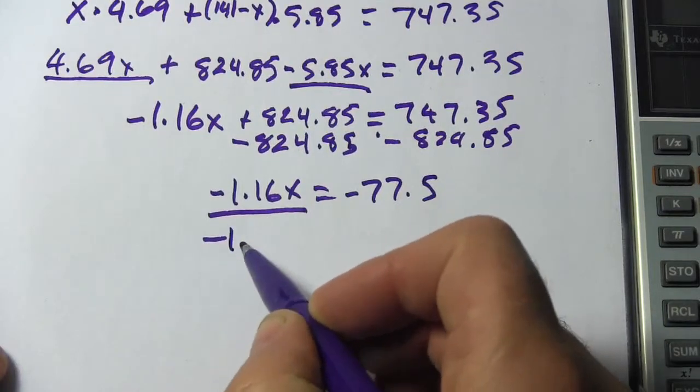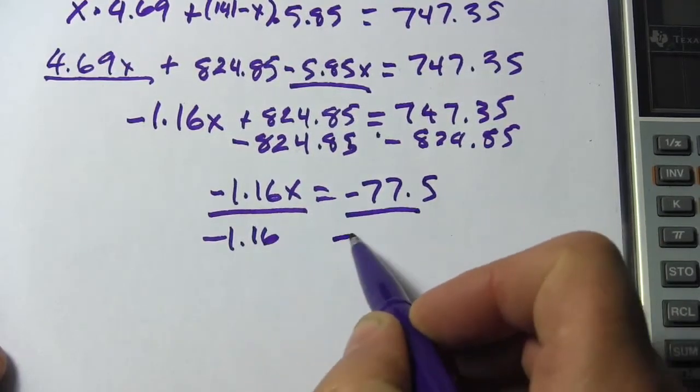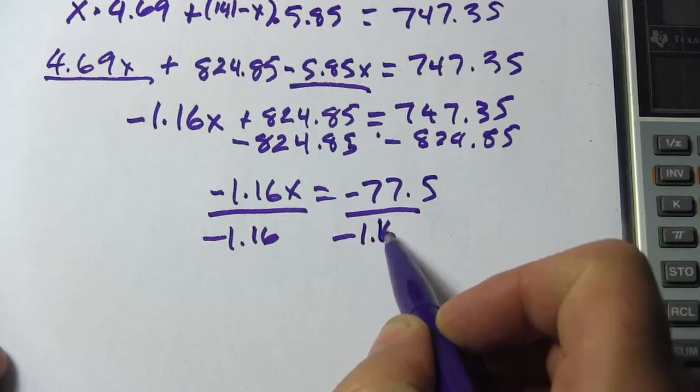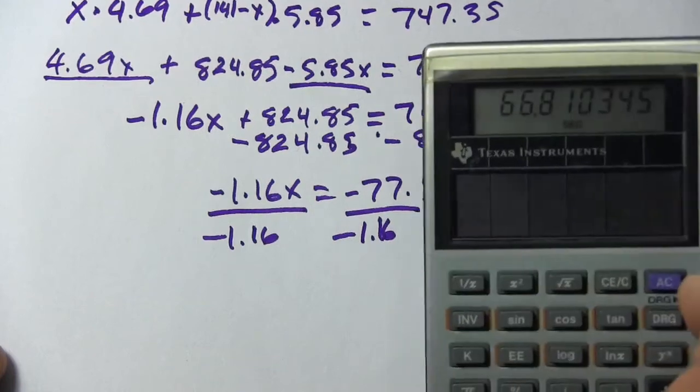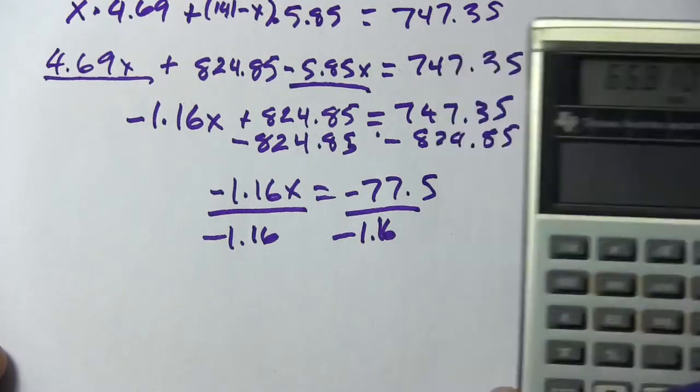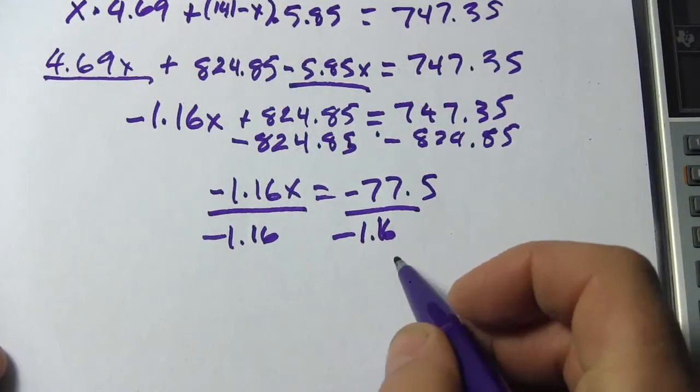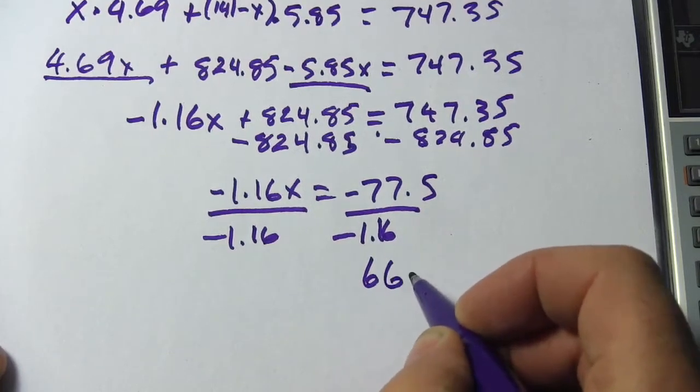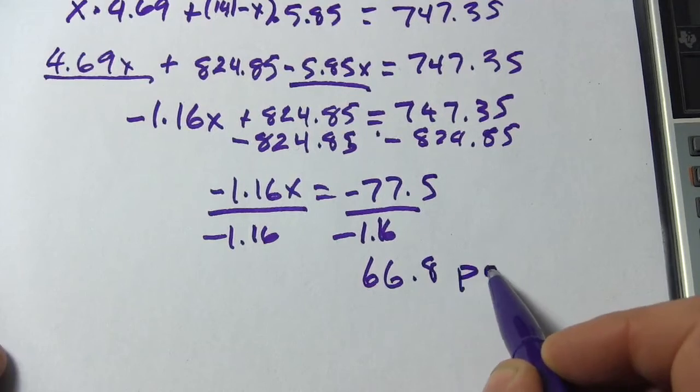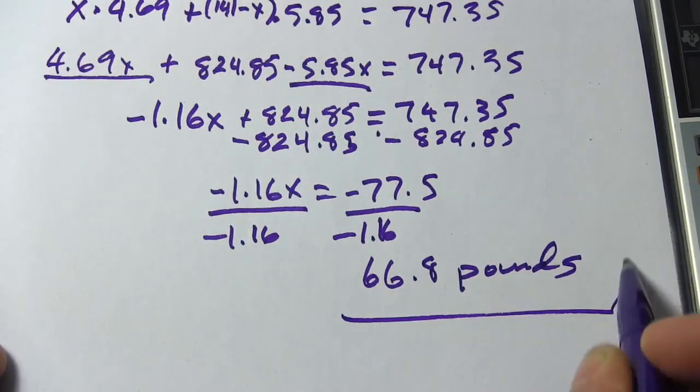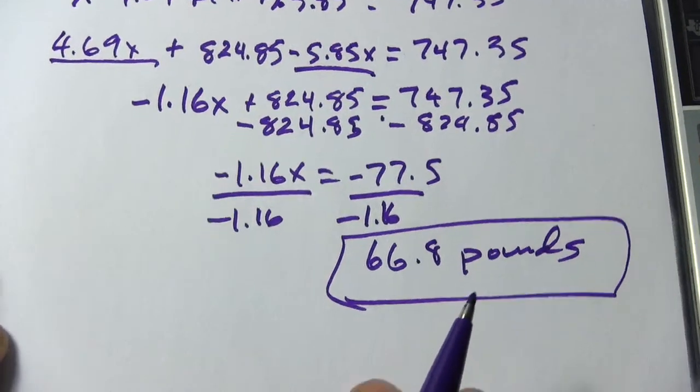Next, we're going to divide by a negative 1.16. And that is 66.8, let's call it 66.8. So 66.8 pounds of type A coffee was used in that mixture.